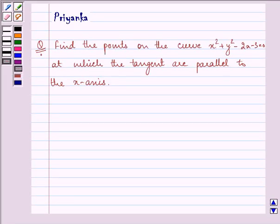Hello friends, how are you all doing today? Let us discuss the question. It says find the points on the curve x square plus y square minus 2x minus 3 equal to 0 at which the tangents are parallel to the x-axis.